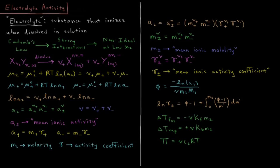This video will discuss the activity of electrolytes in solution. An electrolyte is defined as a substance that ionizes when dissolved in solution — meaning it separates into oppositely charged particles. Because of Coulomb's law, these charged particles have very strong interactions and are usually non-ideal even at very low mole fractions. So the standard equations for solute activities won't work, and we need different nomenclature to describe electrolyte activity.